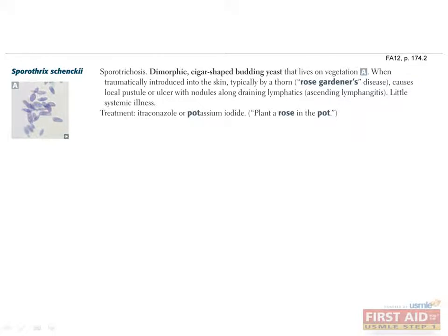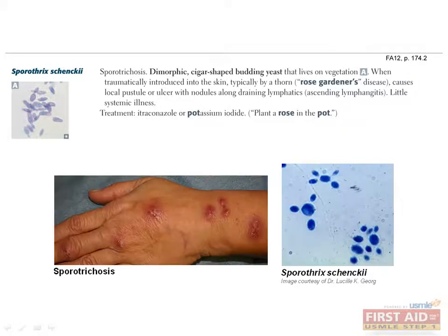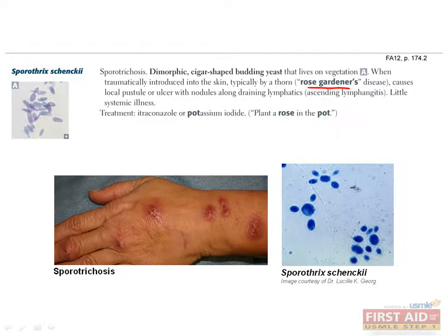Sporothrix schenckii causes a subcutaneous infection. It is introduced into the skin typically via the prick of a rose thorn, so suspect it in any question stem mentioning a gardener. Sporothrix can cause a local nodule, which may become necrotic and ulcerate. From there, sporothrix can drain into the lymphatic channels and create satellite lesions as it travels up the arm.